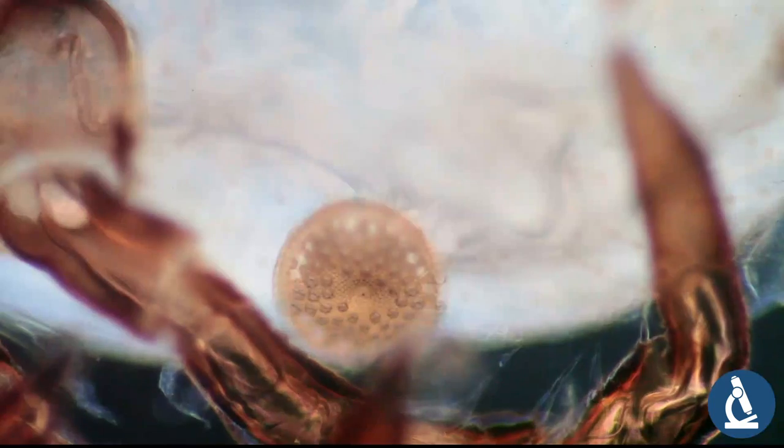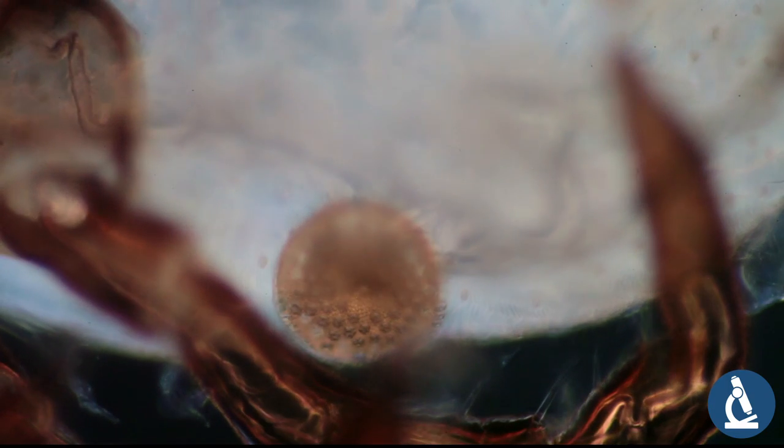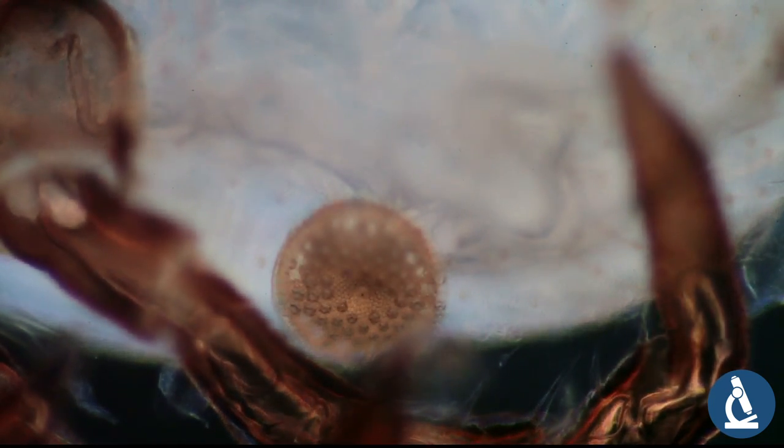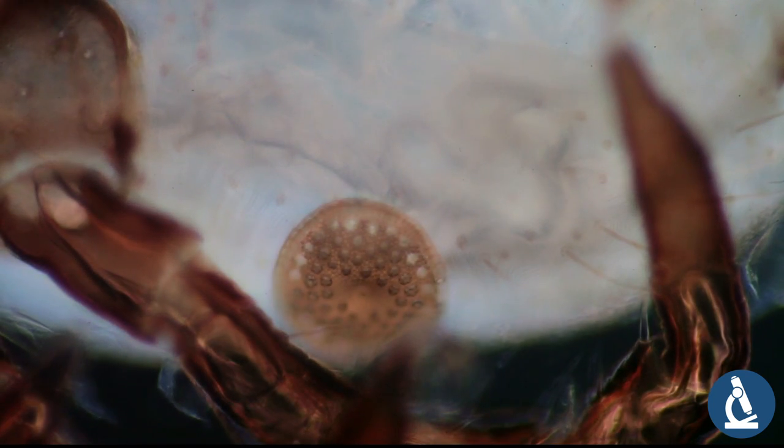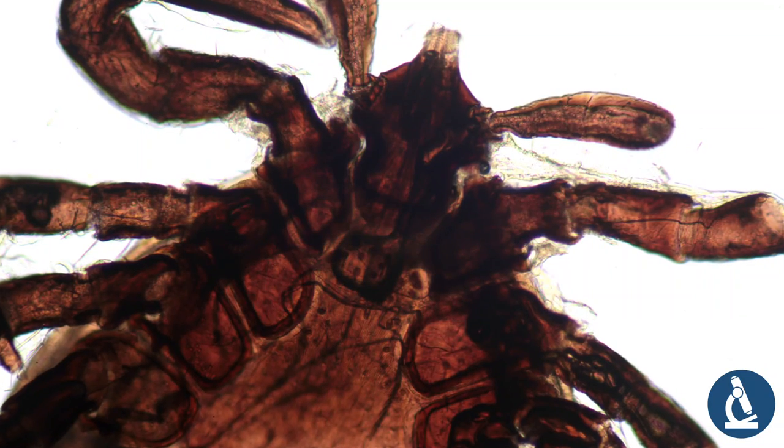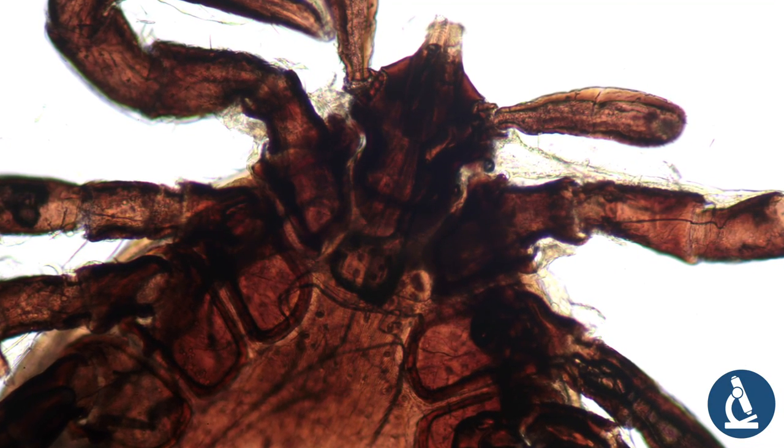But I think we still can see quite nice. This round structure here might be actually the so-called stigma. This is an opening in the exoskeleton of the tick, and this is how the tick actually gets air because there is a system of so-called trachea connected to it which supply the tick with oxygen.